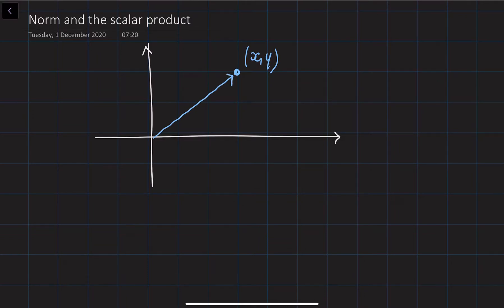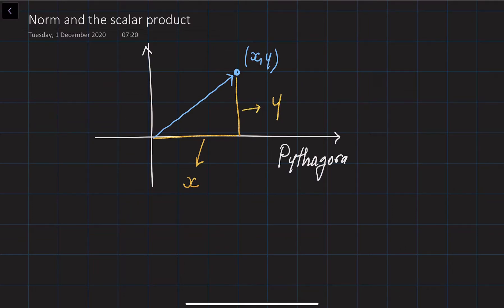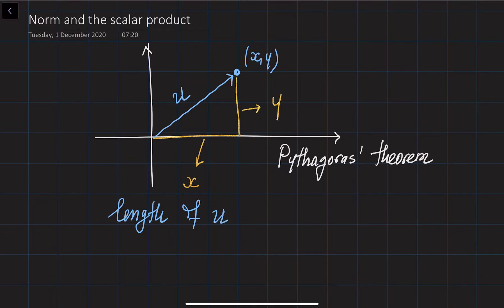So this is going to be our vector, and what I would like to do is create a triangle with a right angle. The height of this triangle is going to be equal to y — essentially the y-coordinate of the point — and the width of this triangle is going to be equal to x, the x-coordinate. Using the Pythagorean theorem, we can find the length of the hypotenuse, or the longer side. So if this is our vector u, then the length of this vector u is equal to the square root of x squared plus y squared, and this is what we define as the norm of this vector.